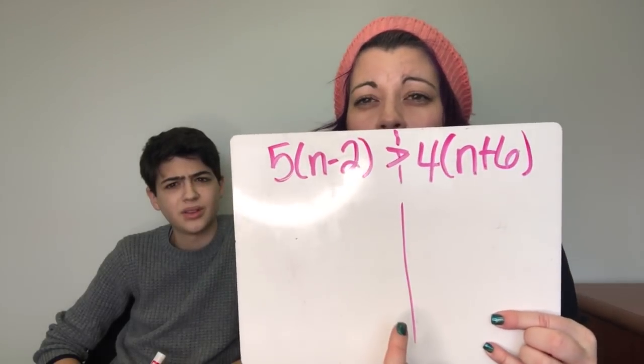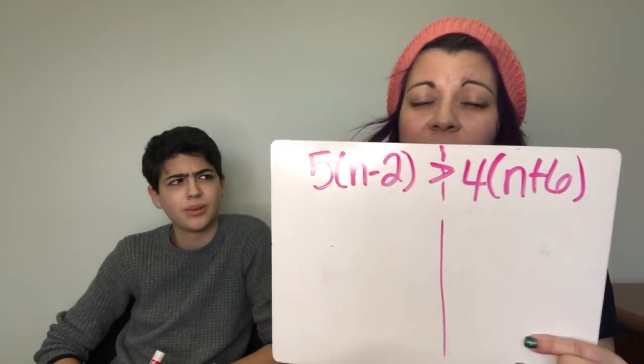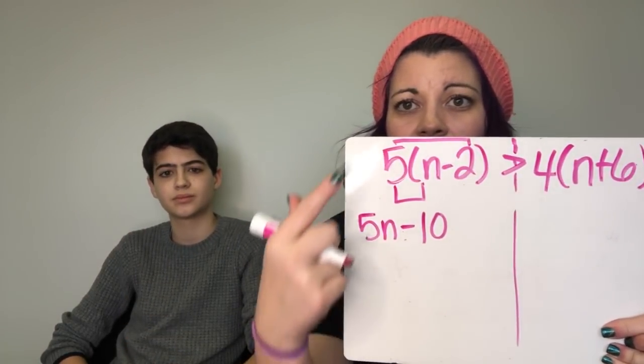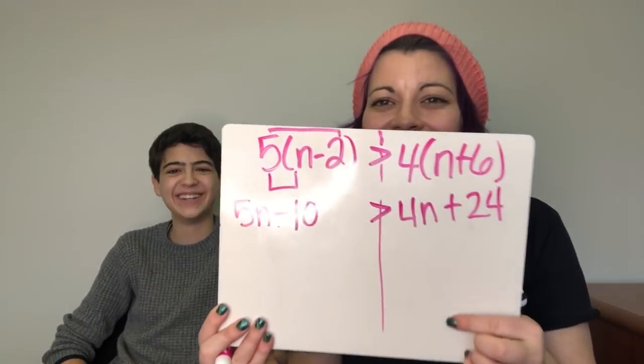Let's do a few. I'll do one first and then Josh will take you through the next one. So this one is 5(n − 2) is greater than 4(n + 6). I split this down to make a left side and a right side where the inequality sign is. The first step is distributive property — I check both sides. Distributing the 5 gives 5n minus 10, and distributing the 4 gives 4n plus 24.